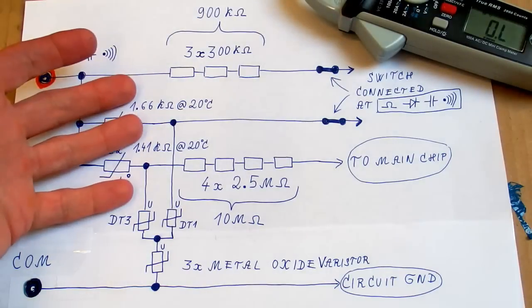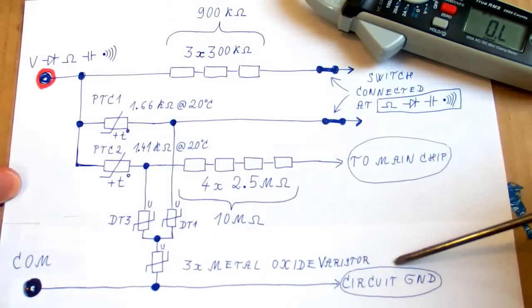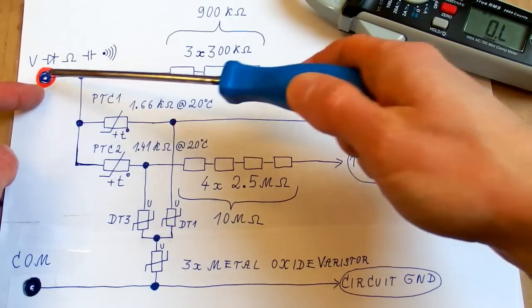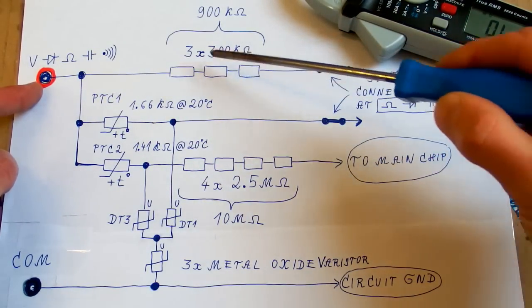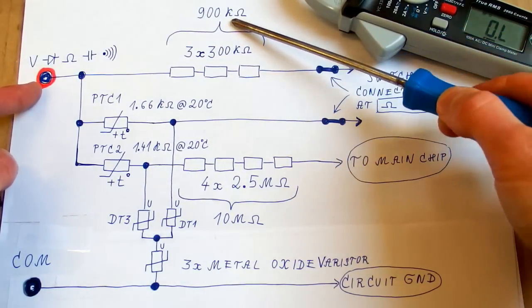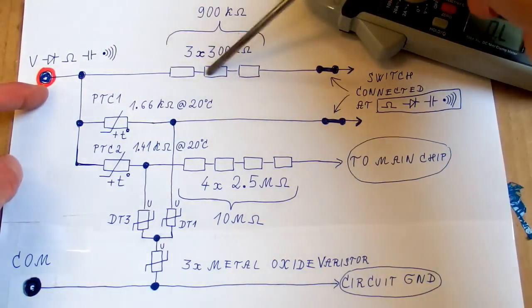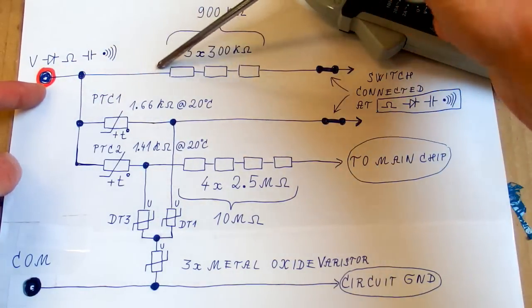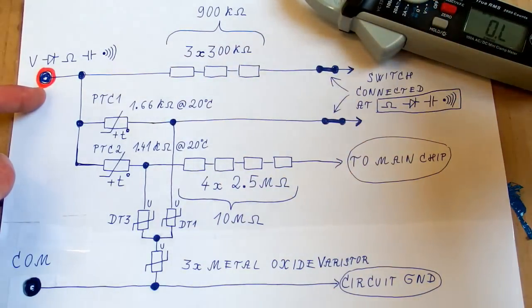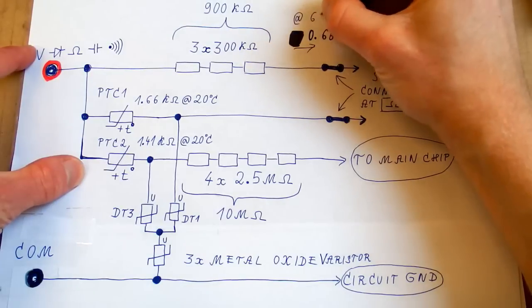So here is the schematic of the protections and the input circuitry. The common terminal goes to the circuit ground. And this one splits into three directions. One goes to those resistors, three times 300 kilo ohms. In total it is 900 kilo ohms. And they are three in series to be able to handle high voltages. And this rail has no protection, no PTCs in it. But it's probably protected by the fact that those resistors have very high resistance. At 600 volts this is gonna pass only about 0.6 or 7 milliamps.